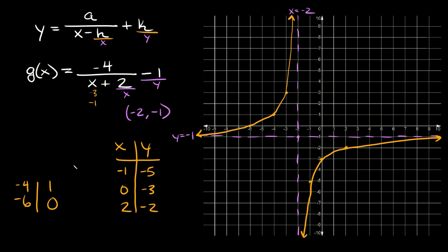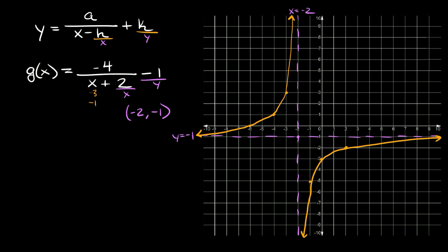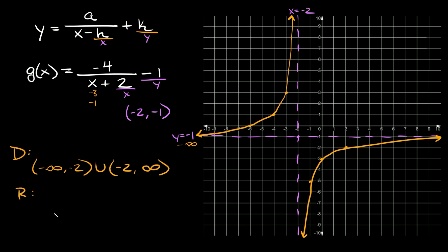The last thing is to find the domain and range. The domain goes from negative infinity, then we skip over negative 2, and continues to positive infinity — so it's negative infinity to negative 2, union negative 2 to positive infinity. For the range, we go from negative infinity, skip over the horizontal asymptote at negative 1, and continue to positive infinity — so negative infinity to negative 1, union negative 1 to infinity.